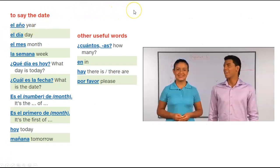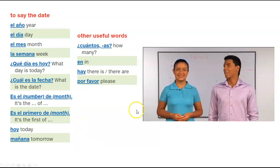Let's go over what we've learned today. To say the date: el año, el día, el mes, la semana. ¿Qué día es hoy? ¿Cuál es la fecha? Es el número de month. Es el primero de month. Hoy, mañana. Other useful words: ¿Cuántos or cuántas? — how much or how many? En — in. Hay — there is or there are. And por favor — please.